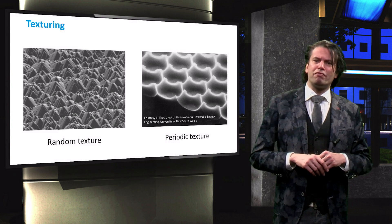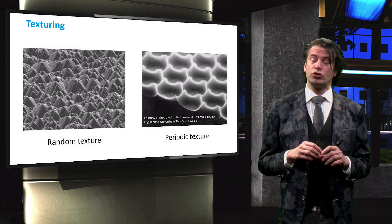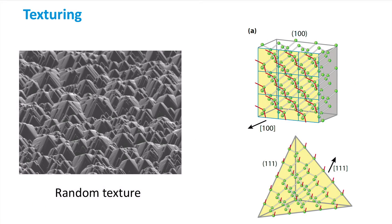Wet etching uses the fact that 1-0-0 surfaces react differently to etching than a 1-1-1 surface. At a 1-0-0 surface, each silicon atom at the surface has two back bonds and two valence electrons pointing to the front. The 1-1-1 surface, on the other hand, has three back bonds and one valence electron pointing towards the plane normal. 1-0-0 surfaces are etched much faster than 1-1-1 surfaces. This behavior is called anisotropic etching.